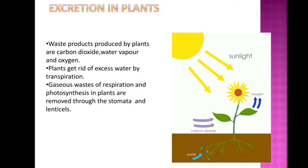In the previous class we discussed excretion in human beings; now we will look at excretion in plants. Plants produce a number of waste products during their life processes. The main waste products produced by plants are carbon dioxide, water vapor, and oxygen.